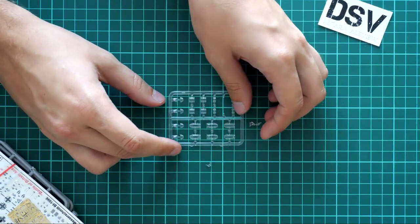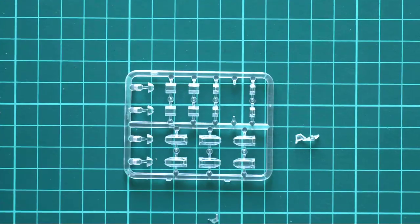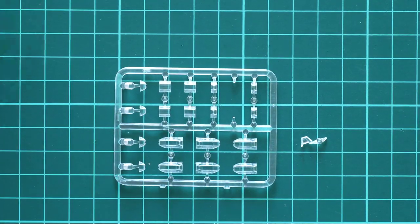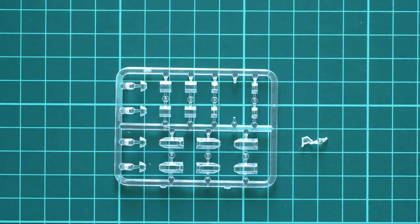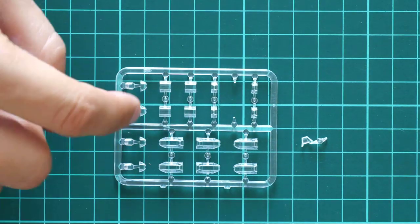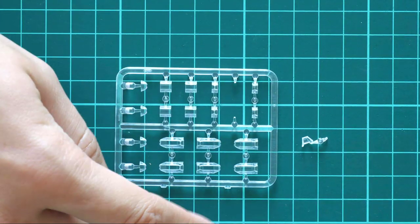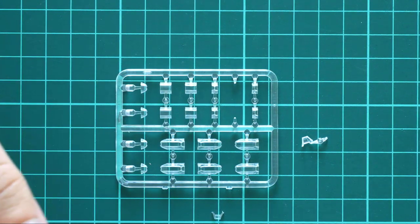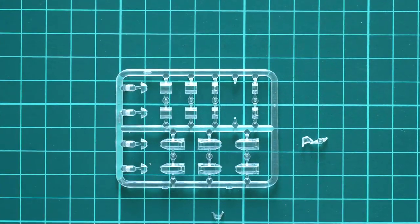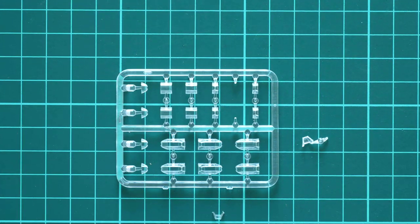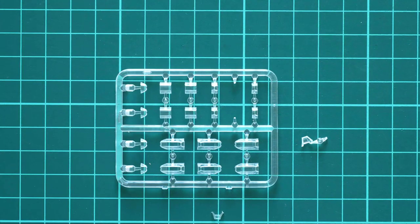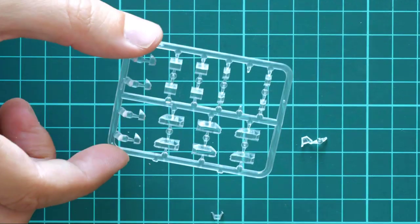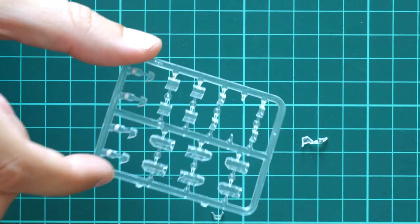Let's start with this clear sprue. Those clear parts obviously will be used for the canopy. As far as you can see we can also build aircraft with two-piece canopy or with one-piece canopy, so it will depend on you. But it's really interesting choice that we get two-piece canopy as well, so you can open the cockpit on your model and you'll get a better appearance. Masks are not included here so you have to be careful while masking all those parts.